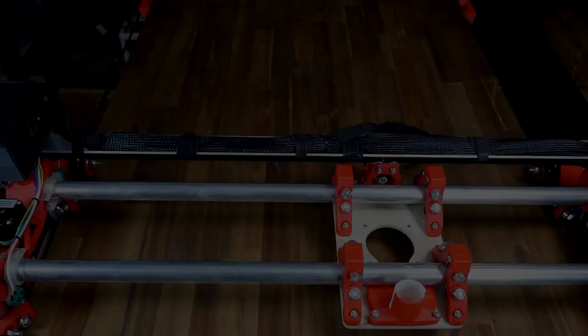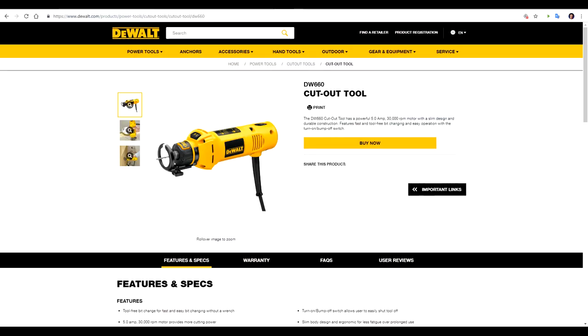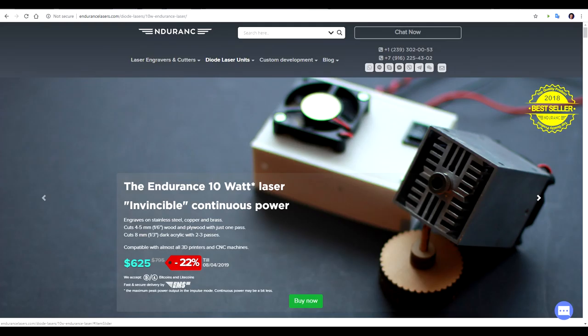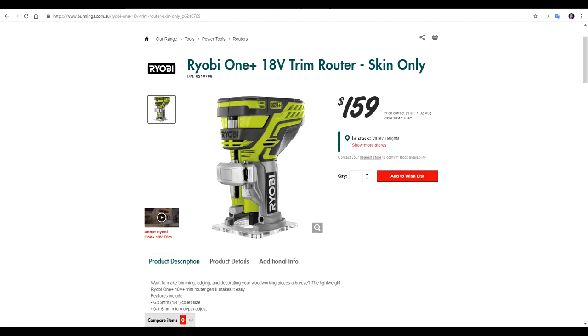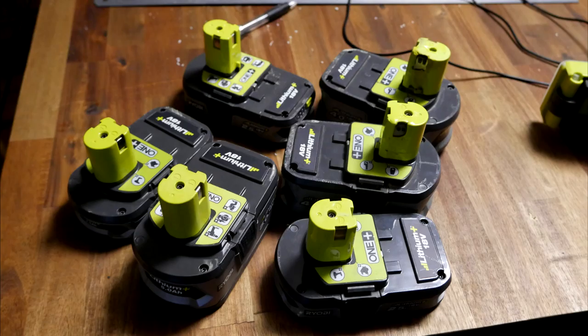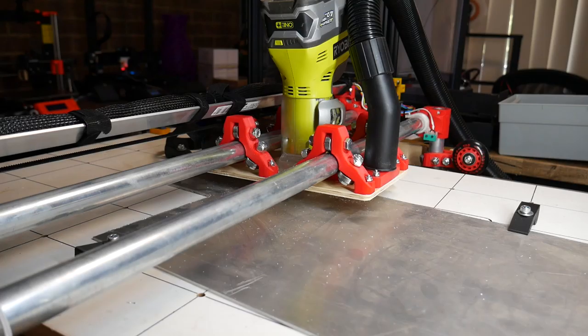When we left off last time we had our machine operating but it didn't have anything in place to do any cutting. The instructions recommend a DW660 DeWalt cutout tool, but my main goal is to use this machine with a laser cutter. In the meantime I'm using this little cordless Ryobi trimmer router. However, I would not recommend this.